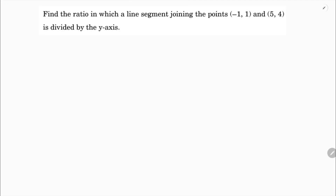Find the ratio in which a line segment joining the points (-1, 1) and (5, 4) is divided by the y-axis. The points are (-1, 1) and (5, 4), and a line joining these two points is divided by the y-axis.